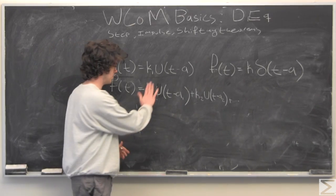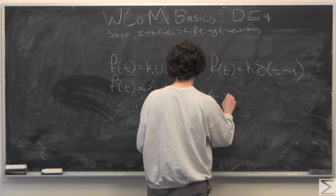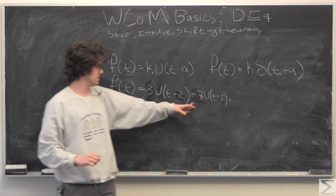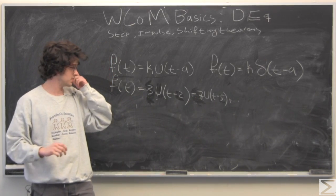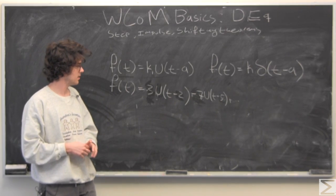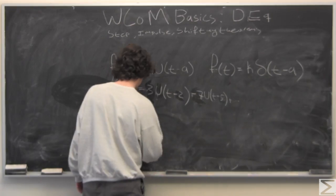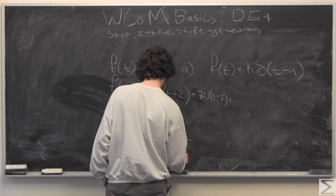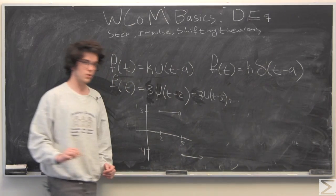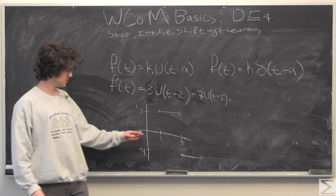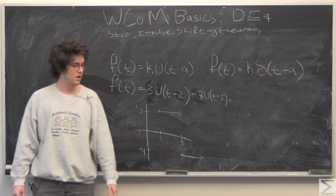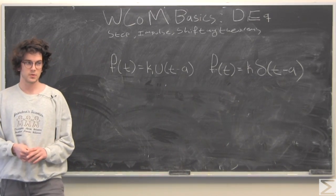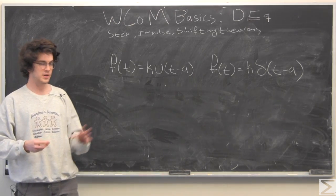So then at a2, f(t) is going to be k1 plus k2, because this doesn't really go away. So let's say, for example, we have k1 = 3, k2 = -7, a1 = 2, and a2 = 5. So I've just gone ahead and drawn what that looks like. It's 0, and then 3, and then -4. Nothing really too funky going on there.